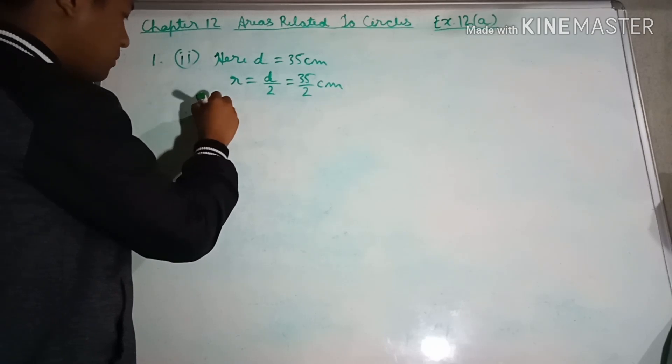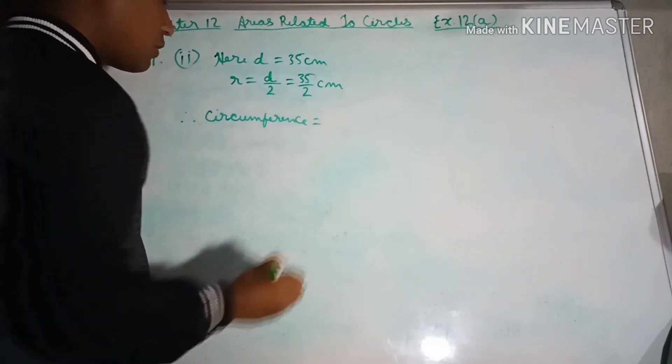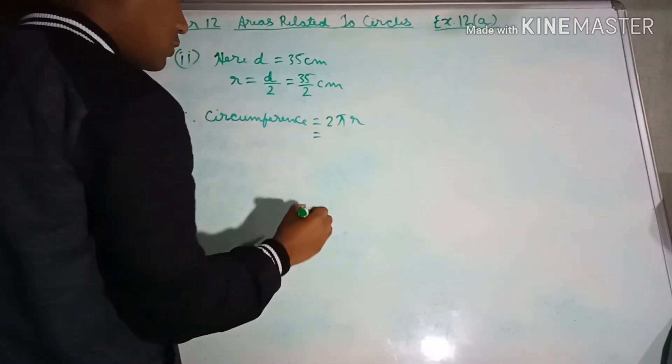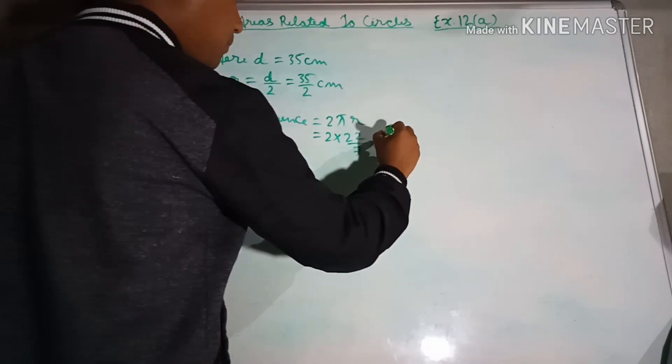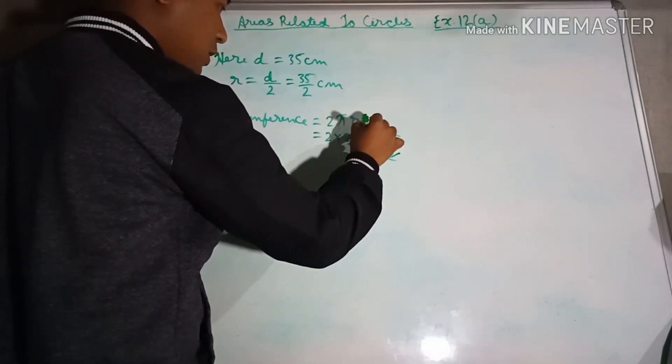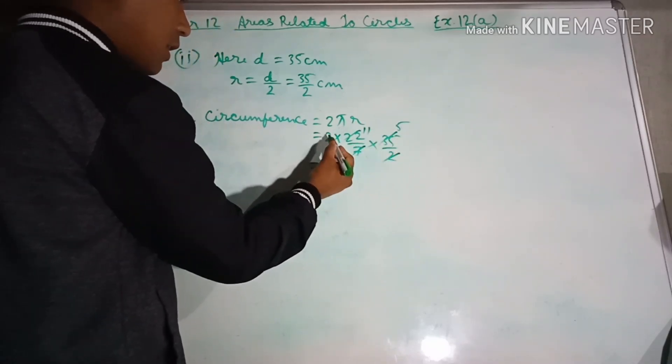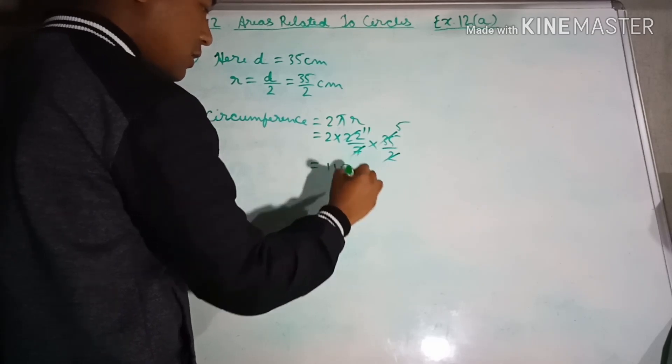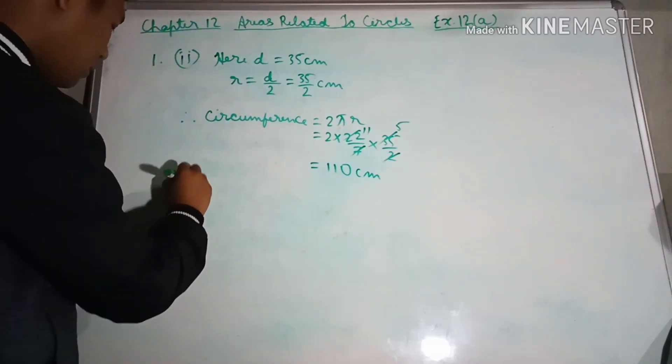Circumference of circle equals 2πr. This equals 2 into 22/7 into 35/2. Canceling, we get 22 into 5, which equals 110 centimeters.